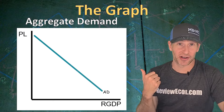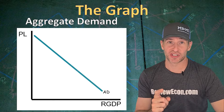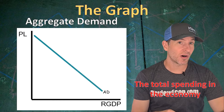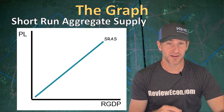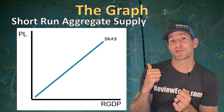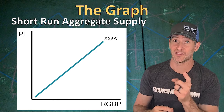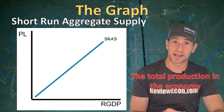One of the curves in this model is the aggregate demand curve. It is downward sloping, just like regular demand curves, showing an inverse relationship between the price level and real GDP. That aggregate demand curve represents all spending within the economy. We also have an upward sloping short run aggregate supply curve, which shows the direct relationship between real GDP and the price level. The reason for that upward slope is because wages and other resource prices are sticky or inflexible in the short run.